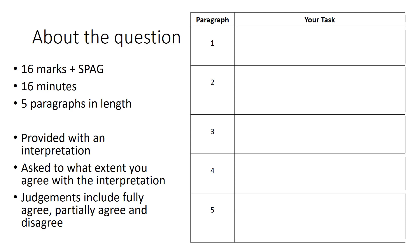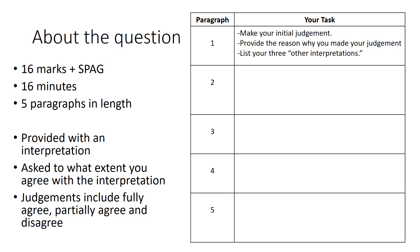Looking at our five-paragraph structure on the right of the screen, we can see the task we need to do within each paragraph. Our very first paragraph requires us to make an initial judgment — I fully agree, I partially agree, or I disagree. We then need to provide the reasons why we made that judgment by listing our three other interpretations, the other three things that other historians may suggest.